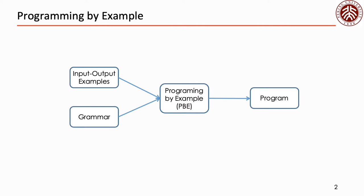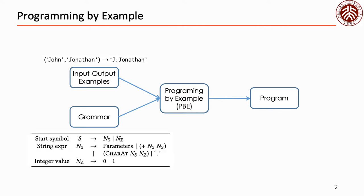Here is a simple PBE task that will be used throughout this talk. Given an example specifying that the program abbreviates the name John-Jonathan into j.Jonathan, and also a grammar limiting that only string concatenation, character extraction, and three constants can be used in the program, the goal of a PBE synthesizer is to find a program from the grammar satisfying the given example. Here, concatenating the first character of the first input, dot, and then the second input is a valid solution for this task.